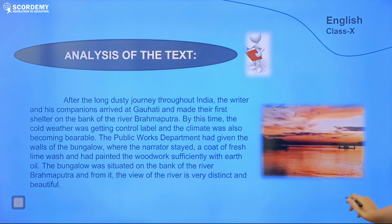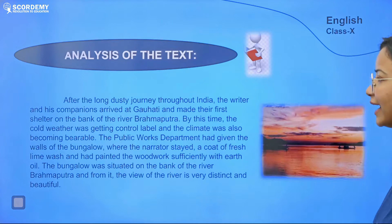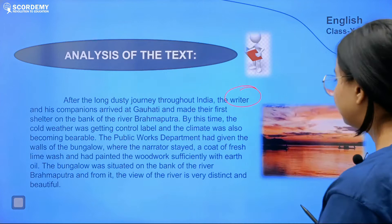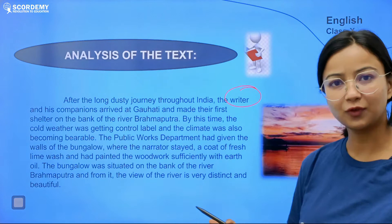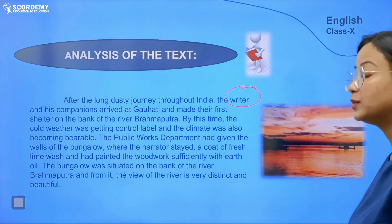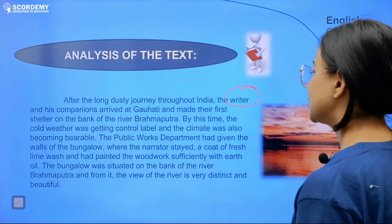Let's analyze the text. There's a picture of the Brahmaputra with boats — something he also experienced and saw. After a long dusty journey throughout India, the writer John Roundtree and his companions arrived at Guwahati and made their first shelter on the bank of the river Brahmaputra. By this time the cold weather was getting underway and the climate was becoming bearable. The Public Works Department had given the walls of the bungalow a coat of fresh lime wash and painted the woodwork with earth oil.